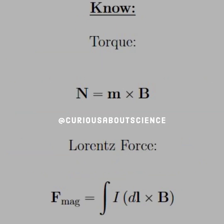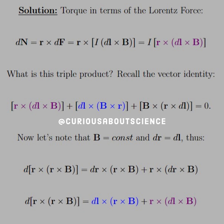Our torque here is m cross B, and the Lorentz force, which we found back in the last chapter, is the force magnitude equals the integral of I multiplied by the cross product of DL with B. We need to write the torque in terms of the Lorentz force. From classical mechanics, torque is R cross F, so taking a differential approach: dN equals R cross dF, and then we integrate through.